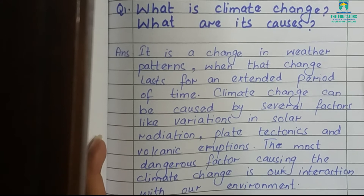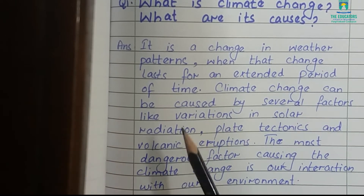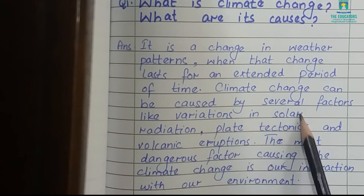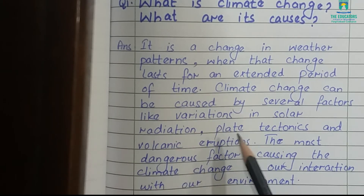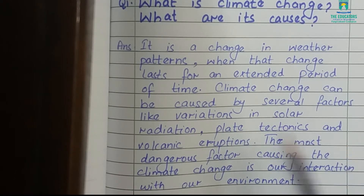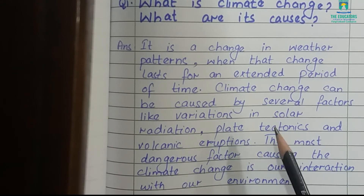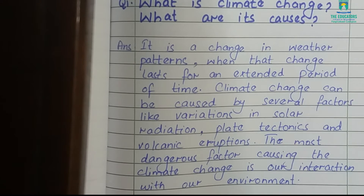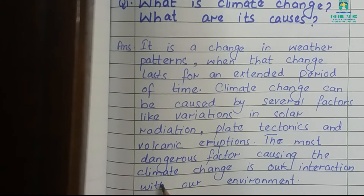Climatic change can be caused by several different factors, like variations in solar radiation — for example, changes in the rays of the Sun — plate tectonics, meaning movement of the plates under the earth, and volcanic eruptions. When a volcano erupts, it gives out lava which is very hot, and this also causes a change in climate.